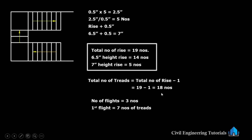Total number of flights is 3 numbers, total number of risers is 19 numbers, and total number of treads is 18 numbers. First flight has 7 numbers of treads. You can see: 1, 2, 3, 4, 5, 6, 7 — 7 numbers of treads in the first flight.